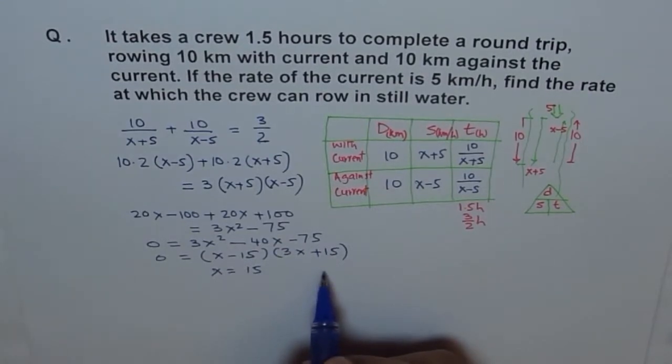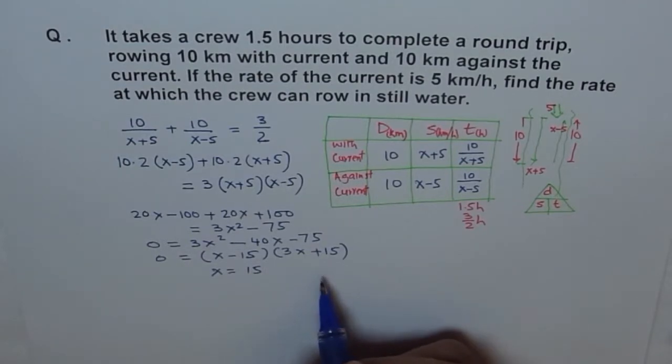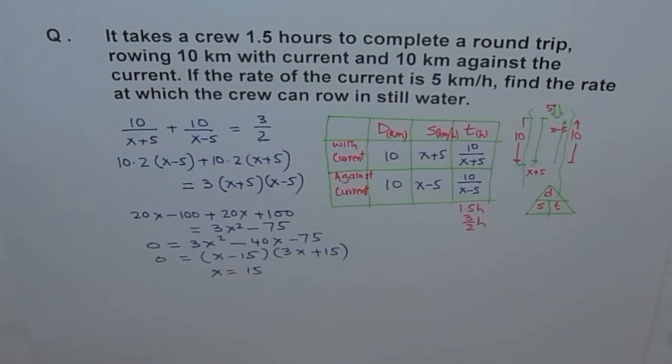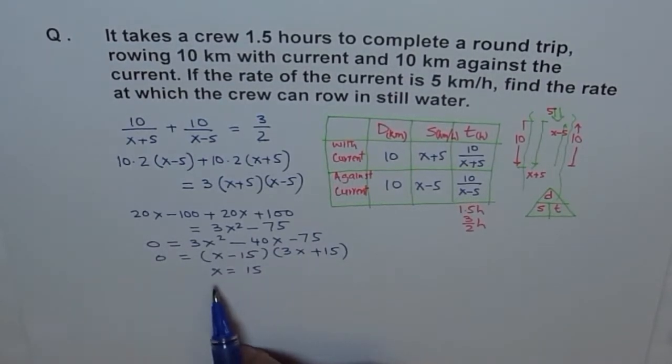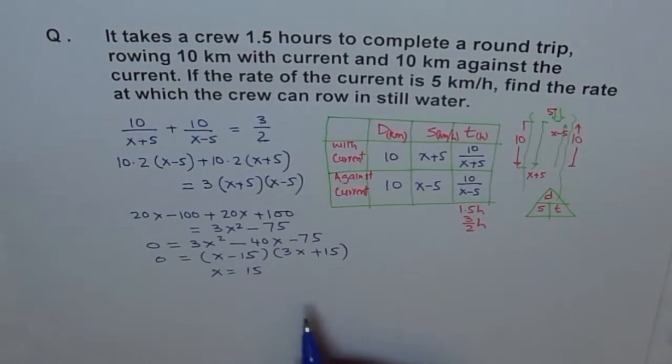And this will be 0 at X equals to minus 15 over 3. But we are not interested in the negative values. We want positive values. X is the speed, right? In still water. It could be 0, but it is definitely 0 or more than 0, not negative. So, we land up with a speed of X equals to 15.